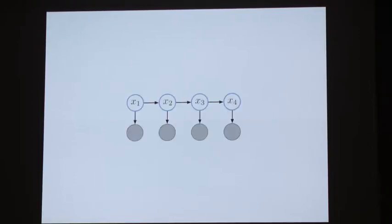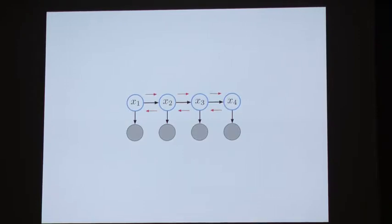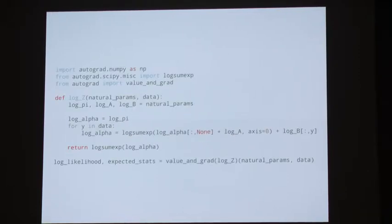Let's take our HMM example and think about how we compute expected sufficient statistics in discrete-state HMMs. We're all familiar with the forward-backward algorithm, where we pass messages in one direction along the chain and then backwards, saving all those messages as we go, and then use those messages to compute expected sufficient statistics after we're done. That's one way to compute expected sufficient statistics, but this identity gives us another one — one that we can write using autodiff.